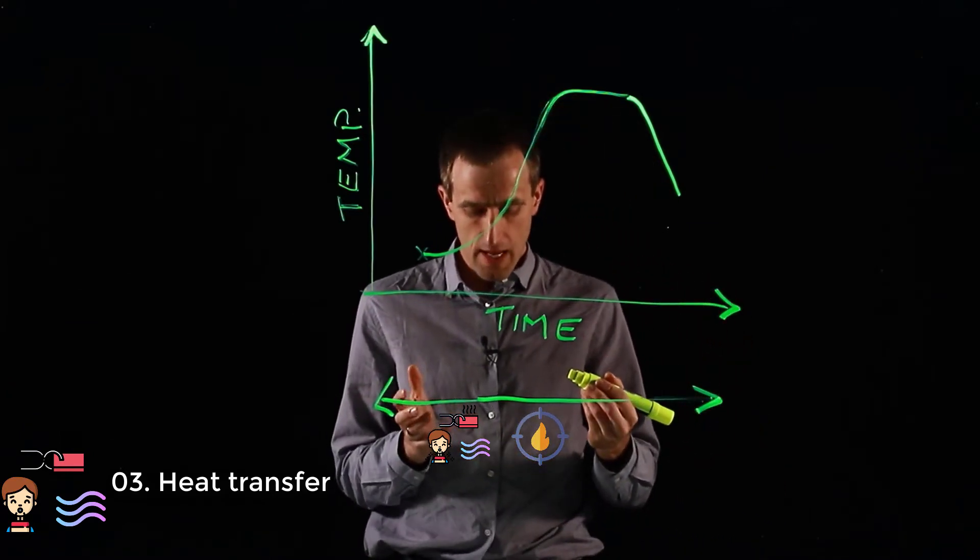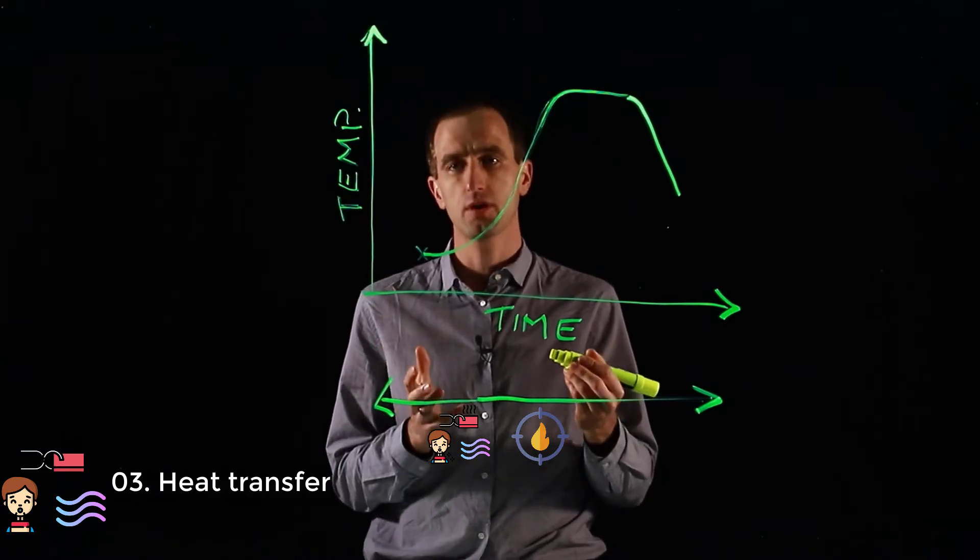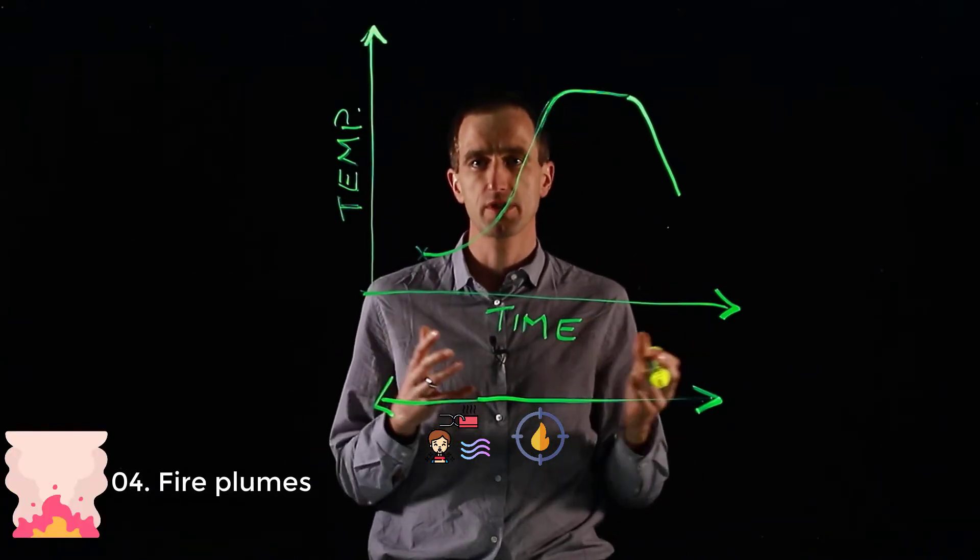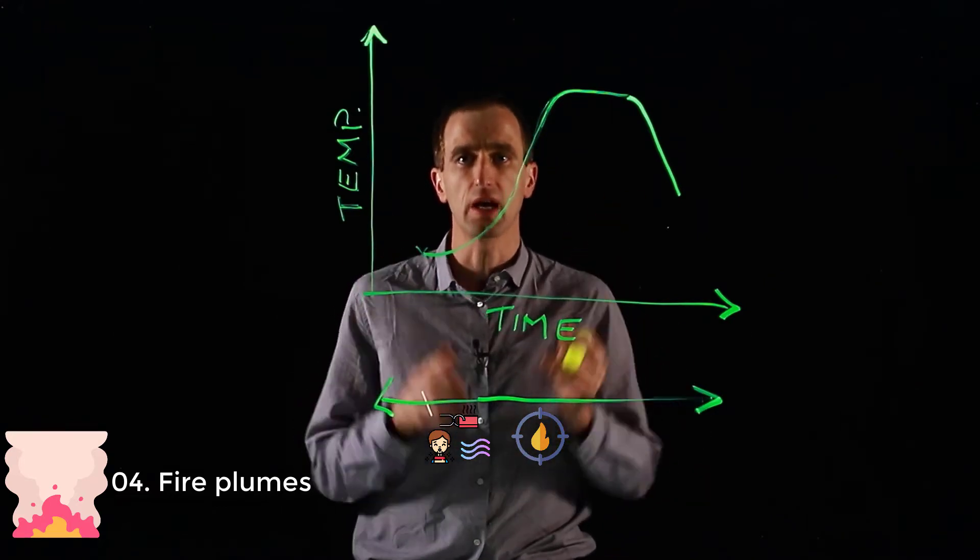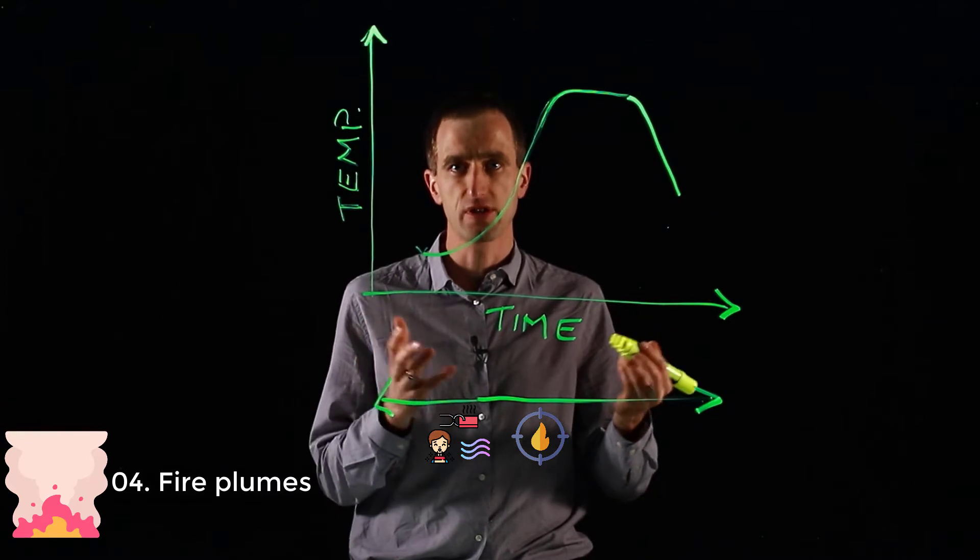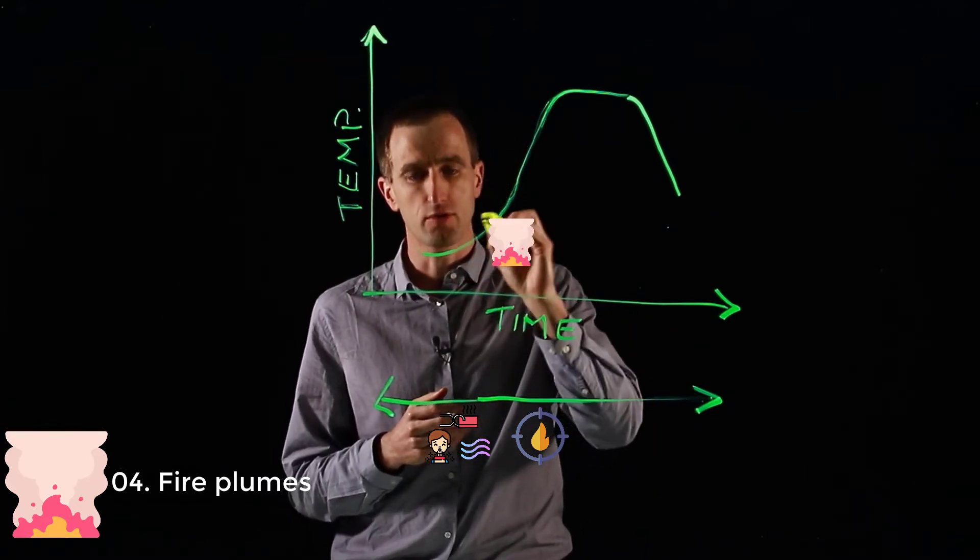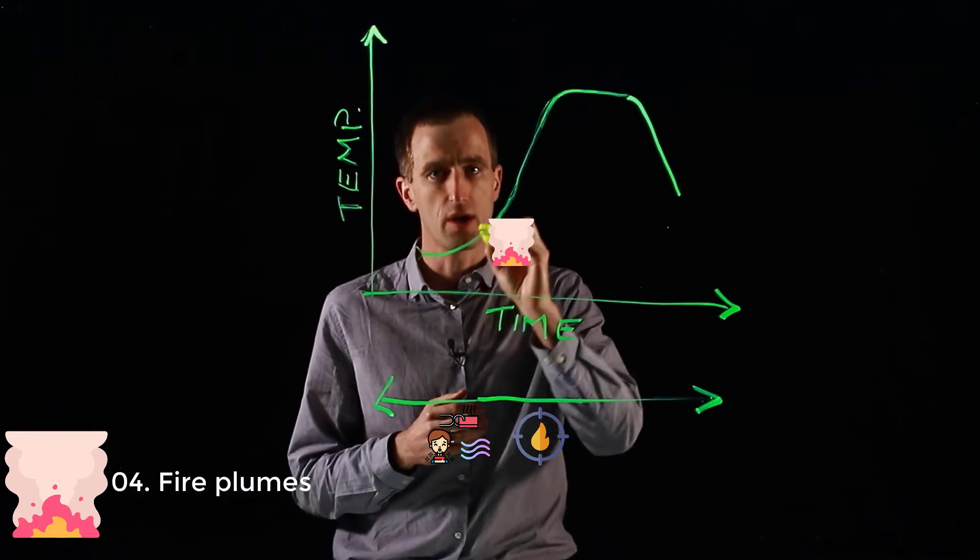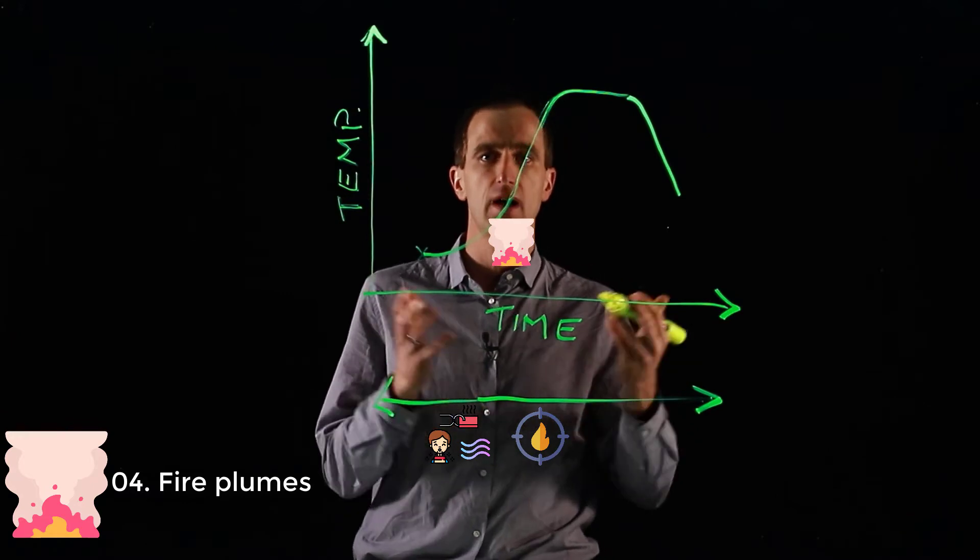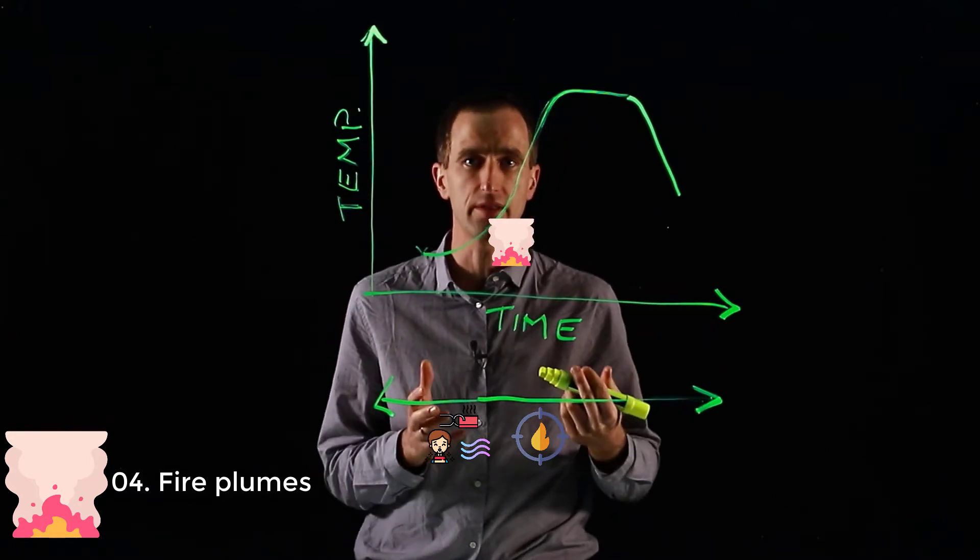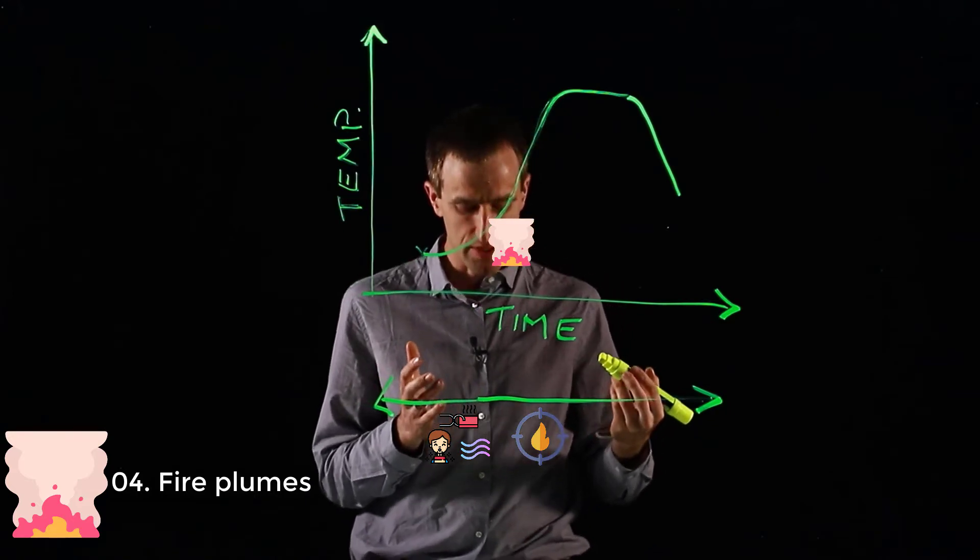Once we have the heat transfer then we will start going on to fire plumes. A plume is once you've got a small fire or a larger fire and it's releasing heat and releasing gases. We'll have our plumes in the growing phase, once we've had ignition progressing through. We will then look at plumes and how they behave, how do we calculate them, how do we calculate the temperature above a plume and smoke being emitted.